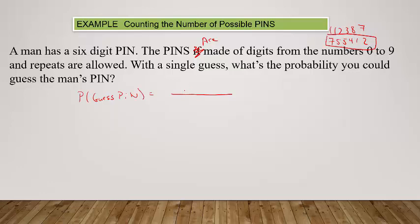We're going to use the classical method for probability to compute this. It's the number of ways to guess correctly with one guess, and you have to divide that by the total number of possible PINs. The number of ways you could guess correct with one guess is literally just one way - this is his PIN, this one guess.